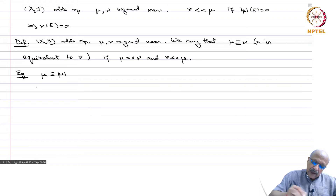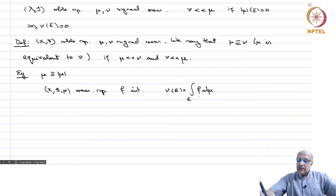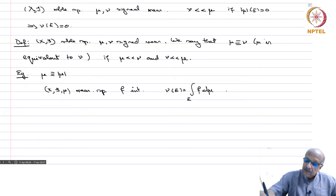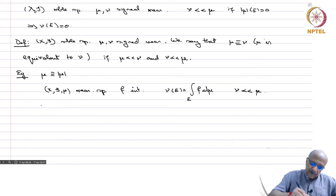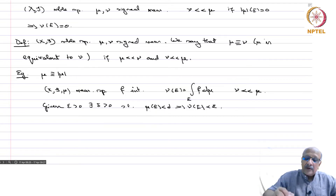When X, mu is a measure space, f is integrable, and we define nu(E) as the integral of f d mu over E, we showed this as an example of nu being absolutely continuous with respect to mu. We also proved that given epsilon > 0, there exists delta > 0 such that |mu|(E) < delta implies |nu(E)| < epsilon. We called this absolute continuity as well.